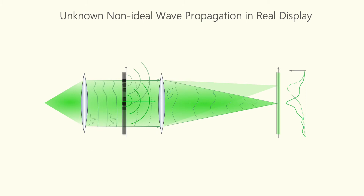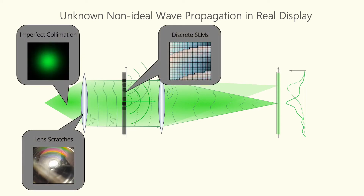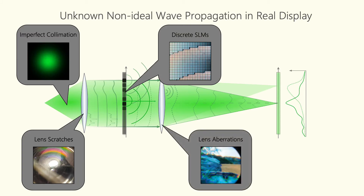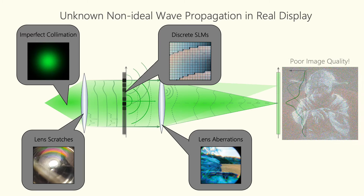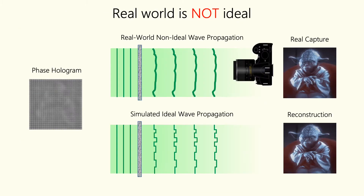Unfortunately, a real display has several non-idealities, such as non-uniform illumination, imperfect lenses with scratches, pixelated SLMs with non-linear phase modulation, and aberrations in lenses. All of these deviations combined make the images coming out of the real hardware holographic display very noisy, resulting in poor image quality. When shown on a real display, these holograms show severe artifacts because of the non-ideal real-world wave propagation, which is both unknown and severely deviated from the ideal wave propagation.